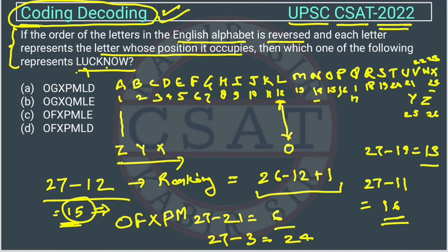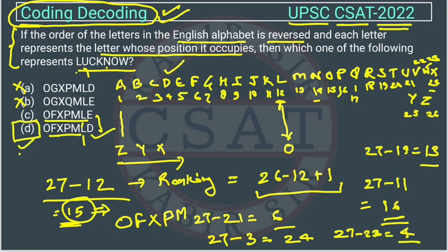Now you can see the answer will be from these two options. These cannot be the answer. No need to check for L, directly check for the last digit because L is given in both. We will check for W. W is at position 23. This will be 27 minus 23 equals 4. The letter at position 4 is D. At last we will have D, so the answer will be option D.